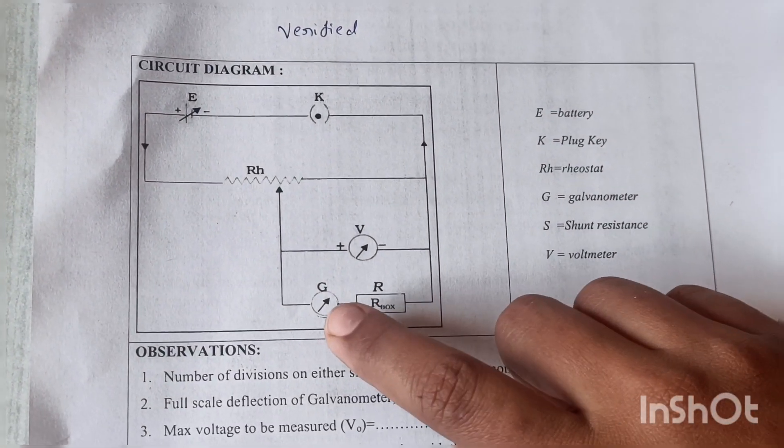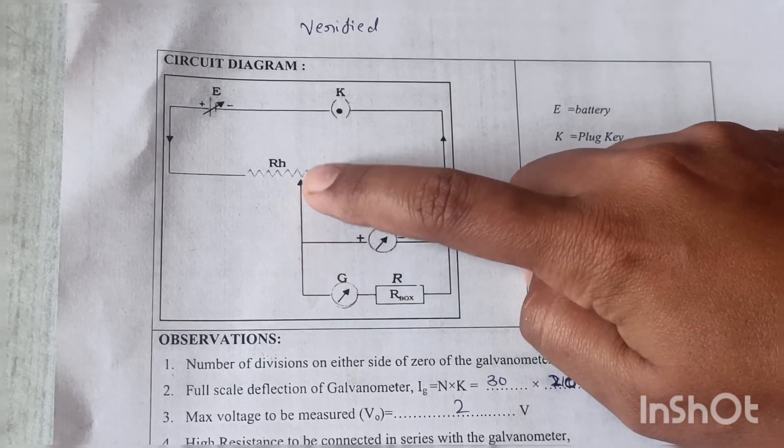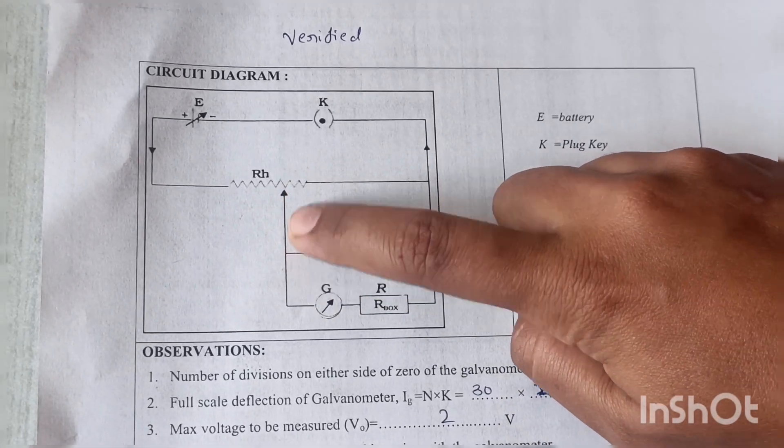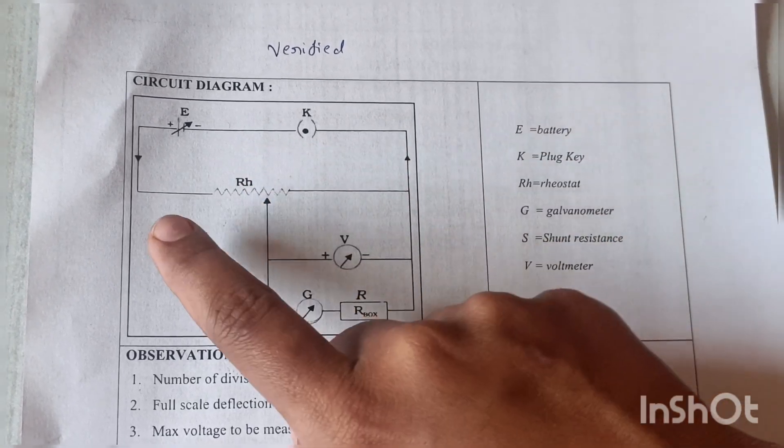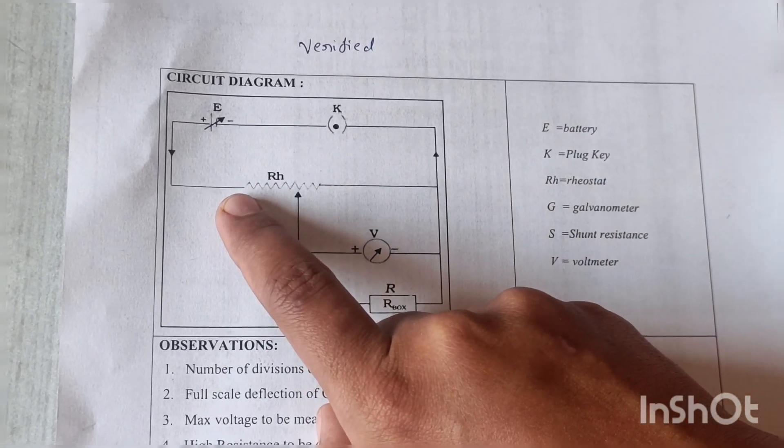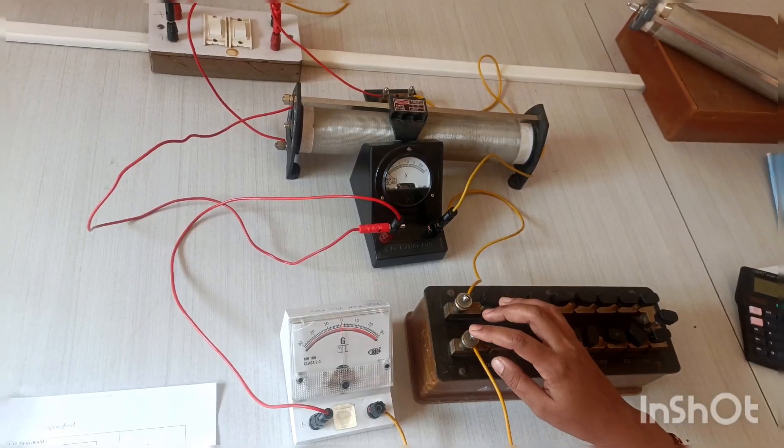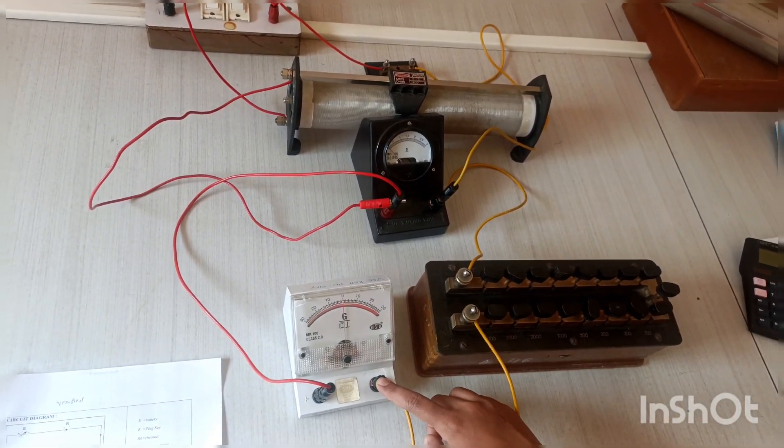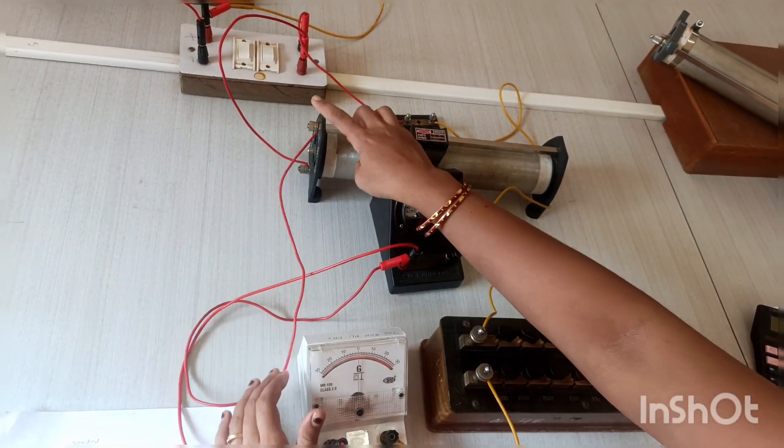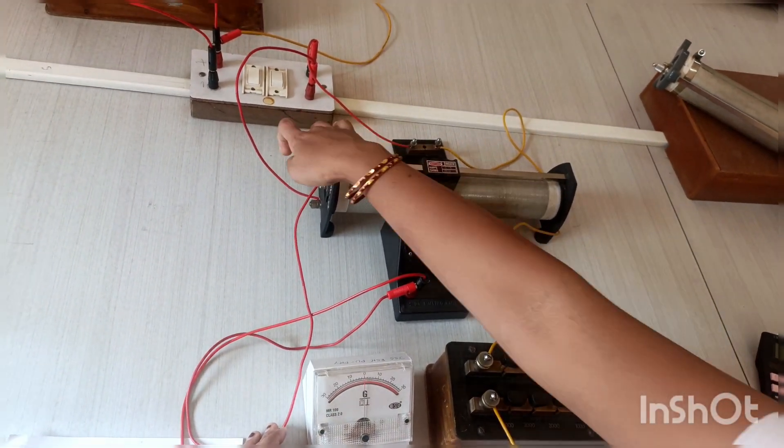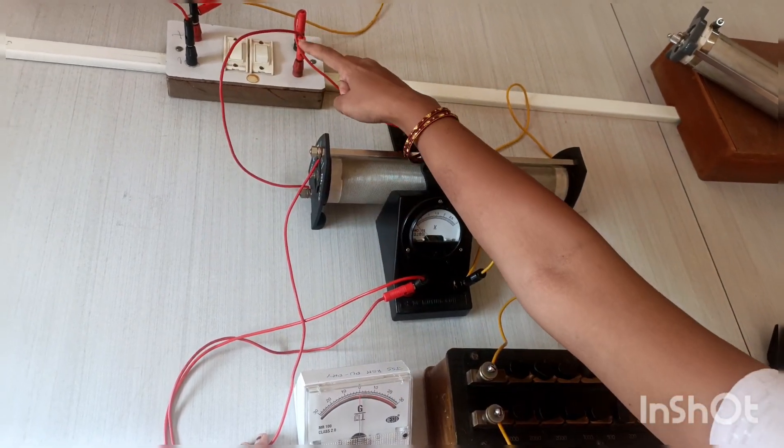Resistance to galvanometer, galvanometer to voltmeter, then voltmeter to upper terminal. This arrow mark shows the rheostat to the upper terminal. Lastly, another lower terminal of the rheostat is connected to battery positive.